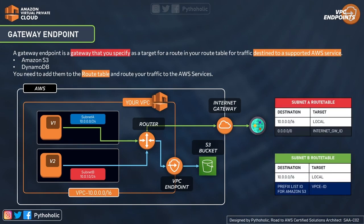A gateway endpoint is a gateway you specify as a target in your route table, whose destination points to the AWS service. You create the VPC endpoint and add it to the route table as a target. Gateway endpoints are supported only for Amazon S3 and DynamoDB. In the diagram, Subnet A connects to Amazon S3 via an internet gateway, while Subnet B has a route to the VPC endpoint ID with destination Amazon S3, accessing it privately without an internet gateway.